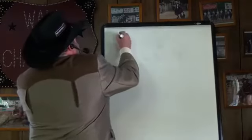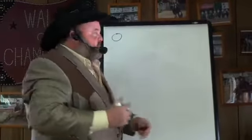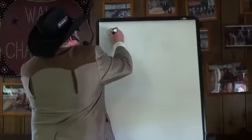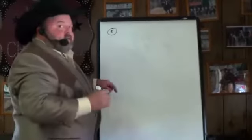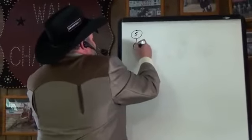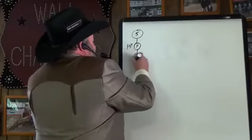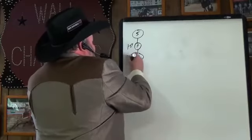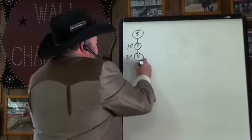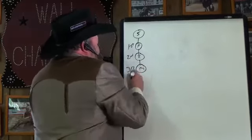Your matching bonuses are paid off the team cycle commissions we talked about in the last video. Let's use Susie, for example. There's Susie's business center. She sponsors Fred right here. That's first generation. Fred sponsors Ralph. That's second generation. Ralph sponsors Mark. Third generation.